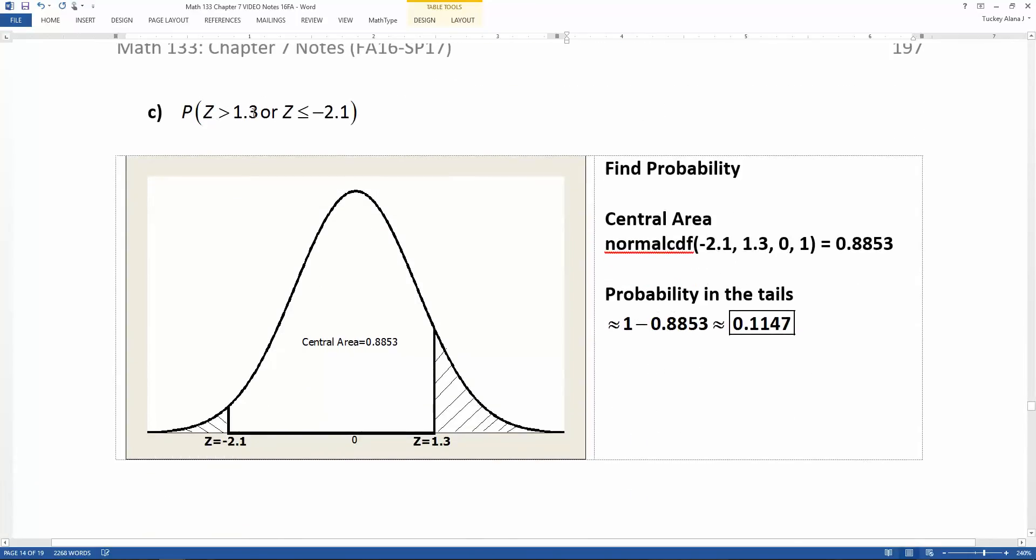z is greater than 1.3 or less than negative 2.1. Now notice where I've placed these. 1.3 is just a little bit past one standard deviation, so it's just a little bit further away than the inflection point. And then I shaded the area to the right of that because I want to be greater than 1.3. Or, I want to be less than negative 2.1, so I have negative 2.1 shaded over here, and this is about where two standard deviations fall. So negative 2.1 is not too tiny in the tail, but it's a pretty small tail.